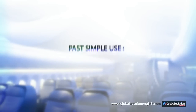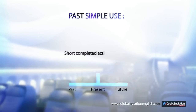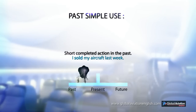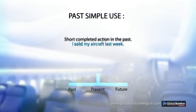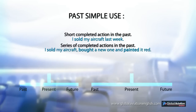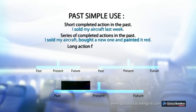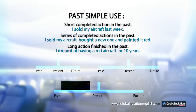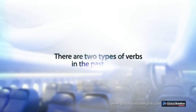Past Simple Use. Short completed action in the past: I sold my aircraft last week. Series of completed actions in the past: I sold my aircraft, bought a new one, and painted it red. Long action finished in the past: I dreamt of having a red aircraft for 10 years. There are two types of verbs in the past tense.